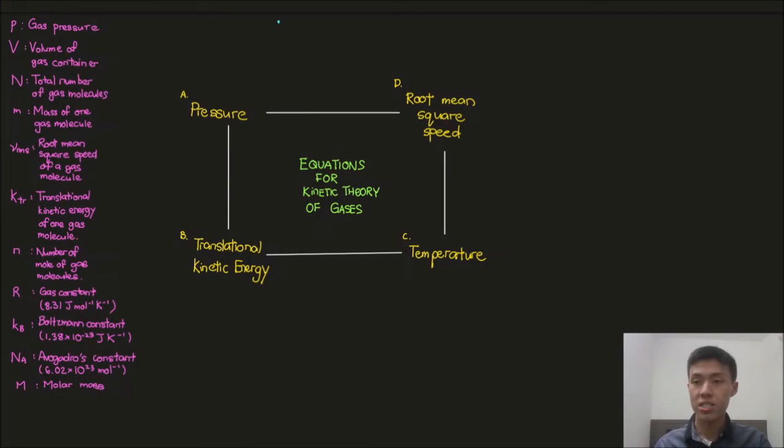Hi everyone. In the previous video we derived the equation which relates the macroscopic gas pressure to the microscopic motion of gas particles. In this video we will be analyzing this equation qualitatively to understand what it means, and from there we further relate it to other quantities like temperature or translational kinetic energy, just to get a big picture of how everything connects together.